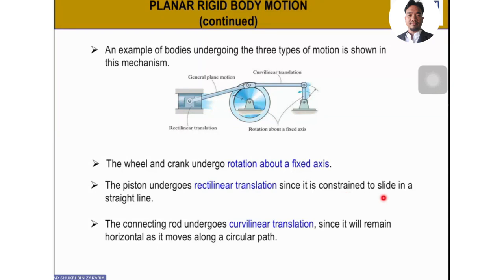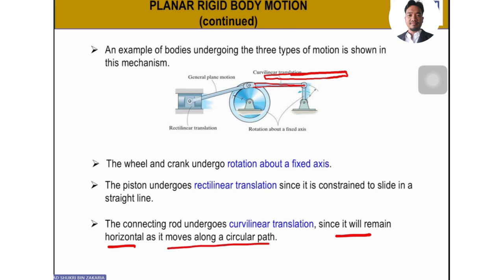The connecting rod undergoes curvilinear translation. When the wheel rotates, the rod moves along a curved path, but its shape and orientation remain the same — still horizontal. So we call it curvilinear translation, since it remains horizontal as it moves along a circular path.